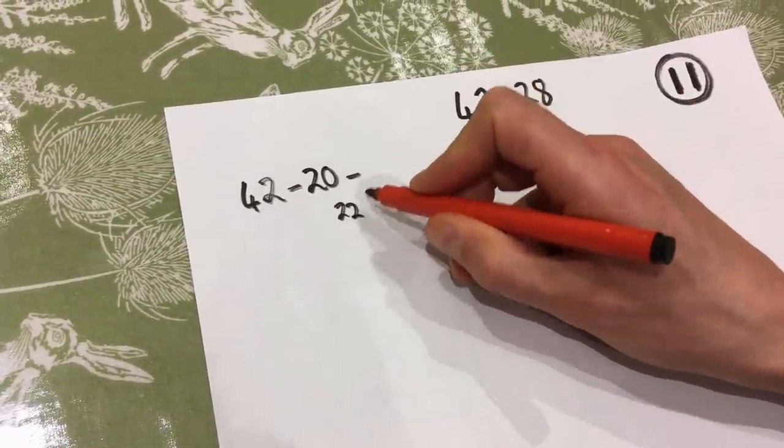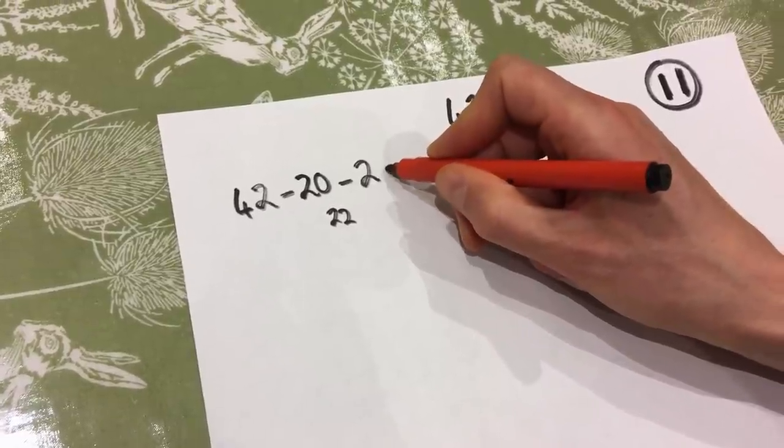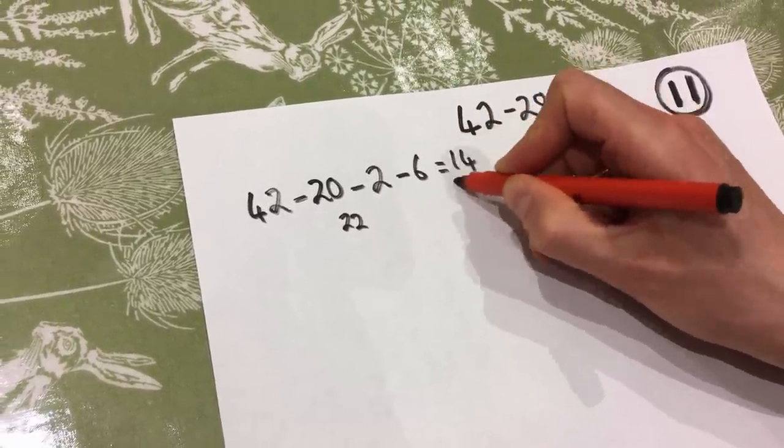And then to subtract eight, I do that in two jumps. So I subtract the two to get me to 20, and then I subtract the six, which gets me to 14.